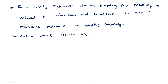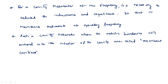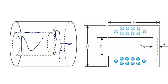Such a cavity resonator where the metallic boundaries will extend into the interior of the cavity are called re-entrant cavities. If you observe, the shape is different — it is internally having some space or boundaries which are extended into the interior. These are shown in this figure as an example, similar to the coaxial cavity.